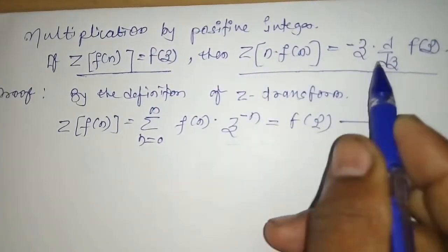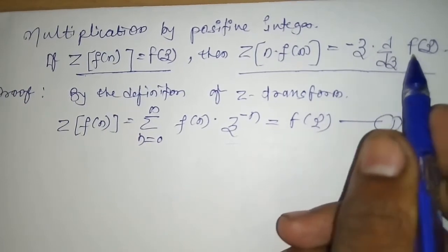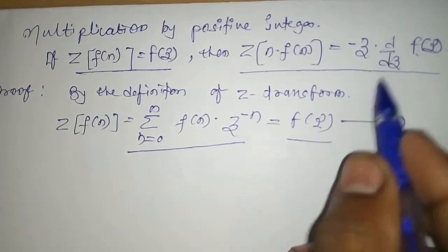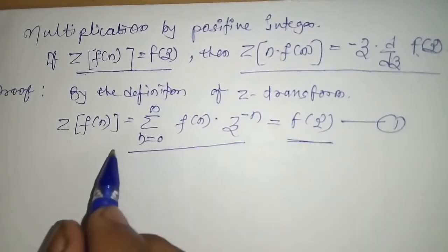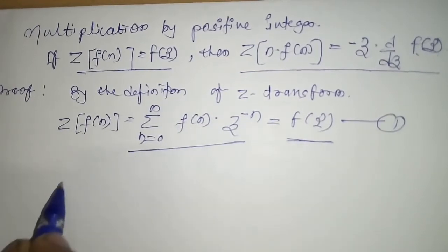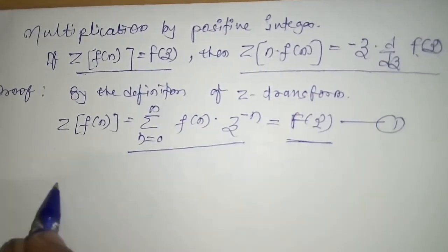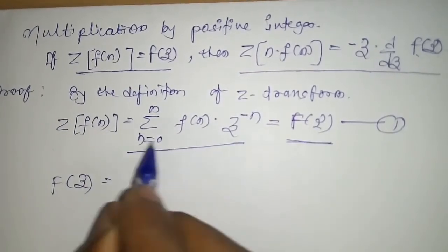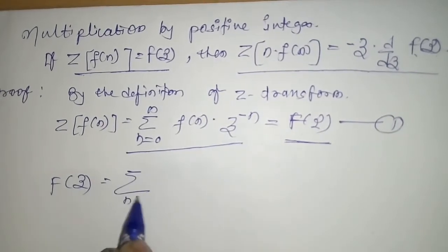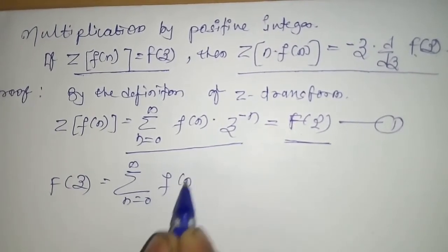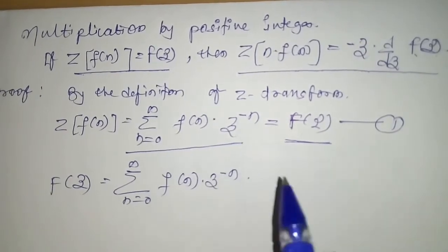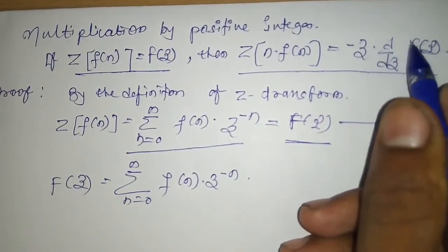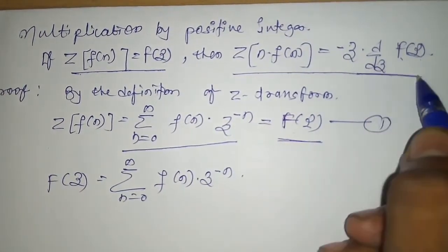Looking at the question, we require D by DZ of F of Z. So we have to differentiate this. We have to prove this equation, where capital F of Z is equal to summation N equal to 0 to infinity, F of N, Z to the power minus N. This is the definition of Z-transform, which is F of Z. In the solution, we have to prove that F of Z equals its derivative form.